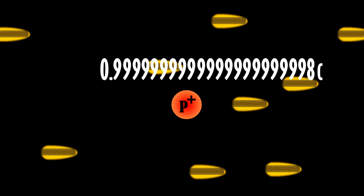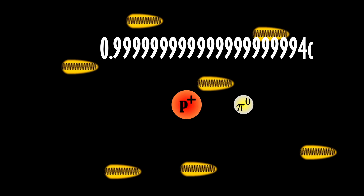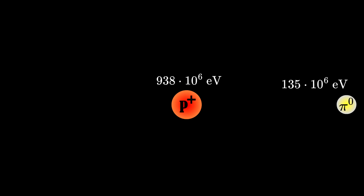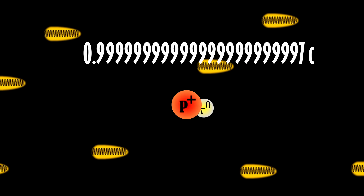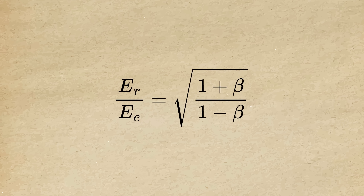But when you reach a certain speed, there is enough energy for creating a pion through a delta resonance. The mass of the pion is quite comparable to the mass of the proton, and therefore it will eat quite a large chunk of energy from the proton after the interaction. If you accelerate the proton further, it would start losing energy due to these interactions. To calculate how the energy of the CMB photons changes from frame to frame you can use the relativistic Doppler shift formula.